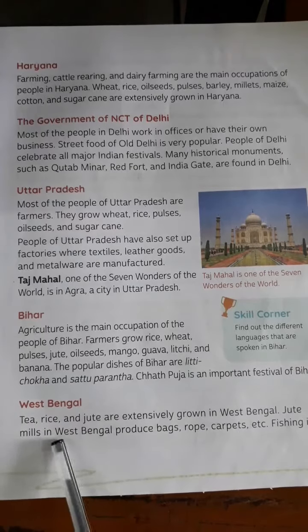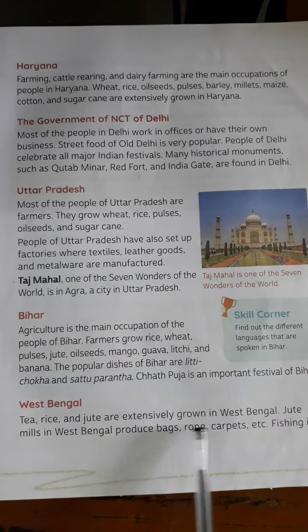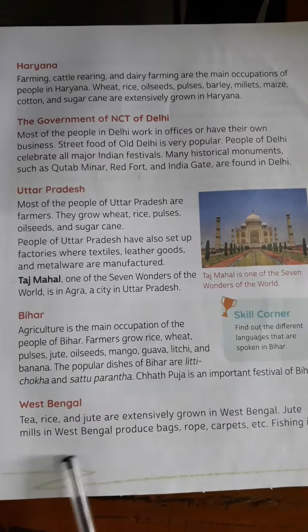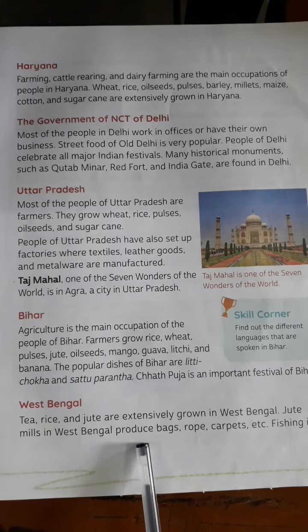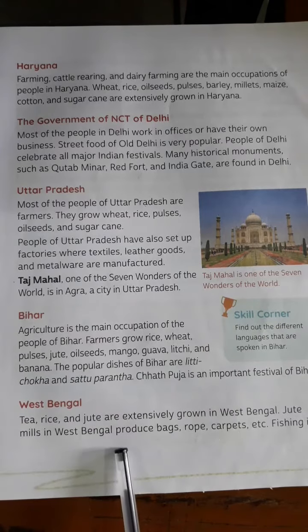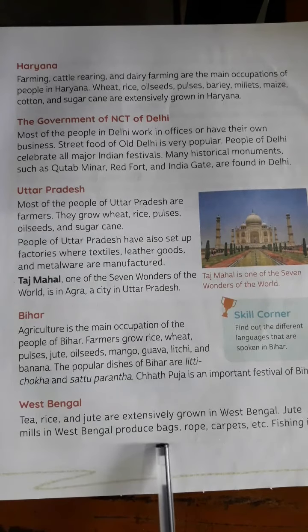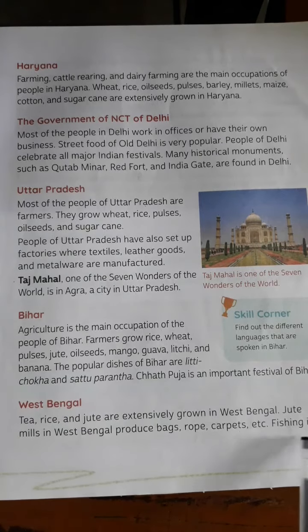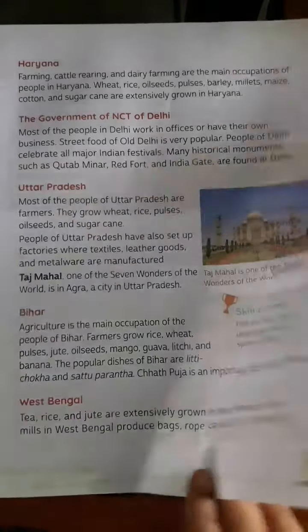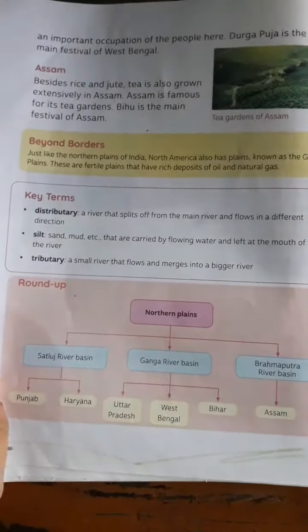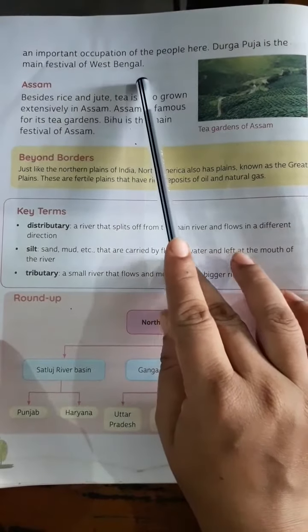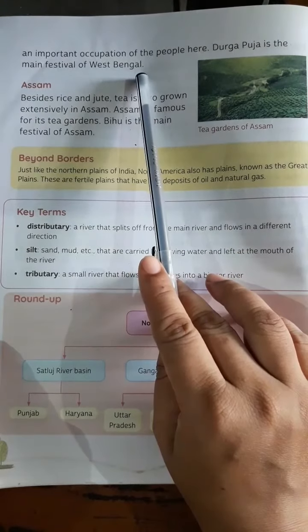In West Bengal, tea, rice, and jute are extensively grown. Jute mills are found here where bags, ropes, and carpets are produced. Fishing is also an important occupation. Durga Puja is the main festival of West Bengal.